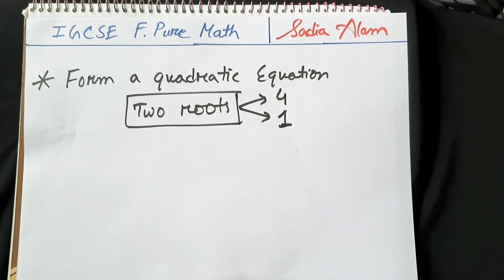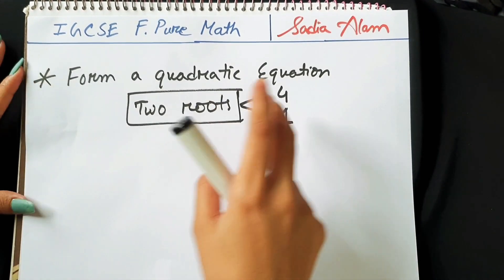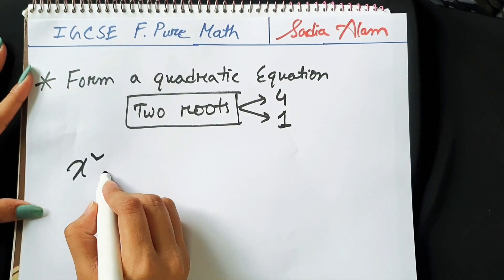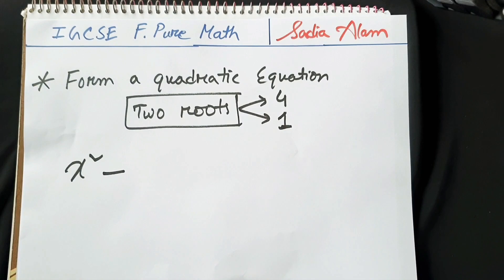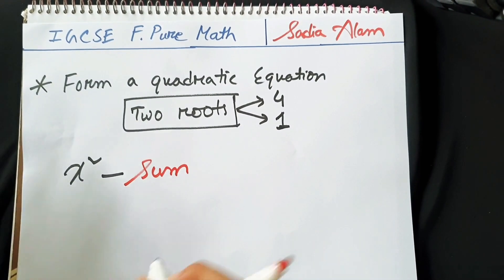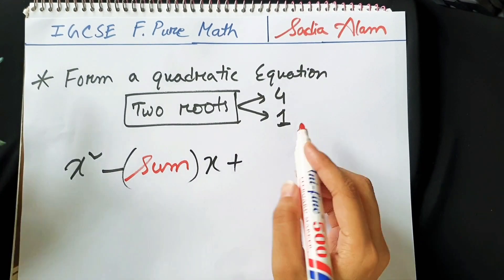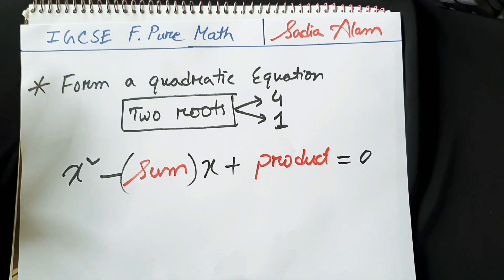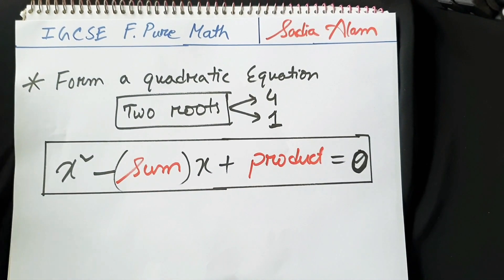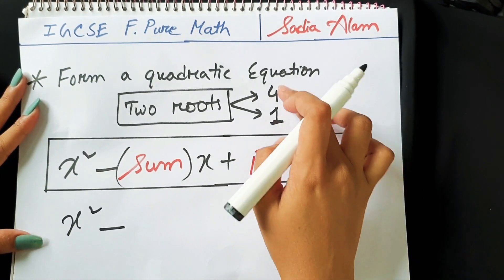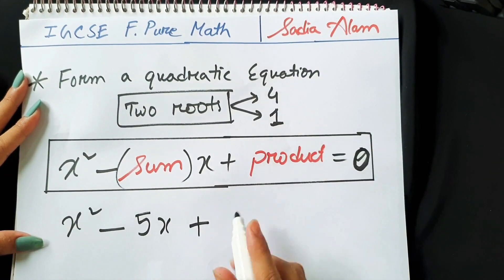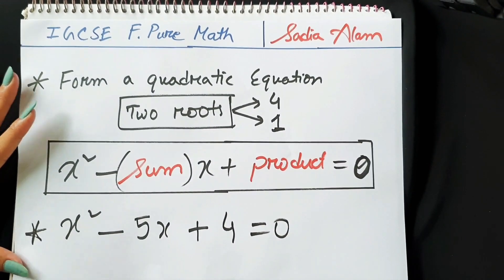Now we will see how to form a quadratic equation given that we already know the roots. For example, the two roots are 4 and 1 and we need to form the quadratic equation. The formula is: x² minus (sum of the roots)x plus (product of the roots) equals 0. If I substitute the values: the sum of the roots is 4 plus 1 equals 5, and the product is 4 into 1 equals 4. So this is the quadratic equation.